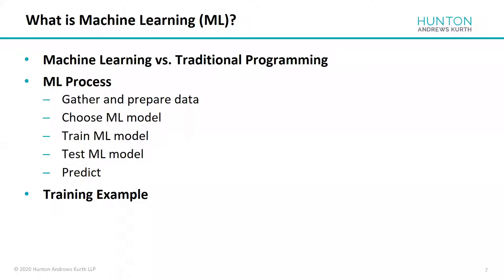The next step is choosing the machine learning model, which is also not trivial. There are many different types of machine learning models, and some are better suited to certain types of problems than others — whether it's a classification model, regression, supervised versus unsupervised learning, et cetera. Next is the training step, which is obviously key because that's where the value comes from in improving predictive performance. After training, you use additional data to test the model to make sure it's performing as you expect, and once that step is done, it's ready to make predictions based on new data it's never seen before.